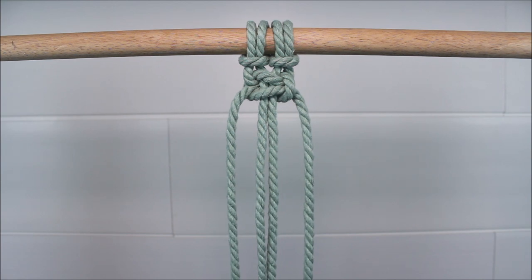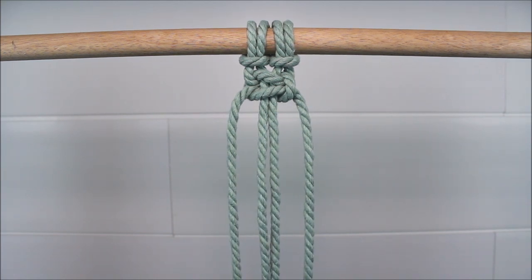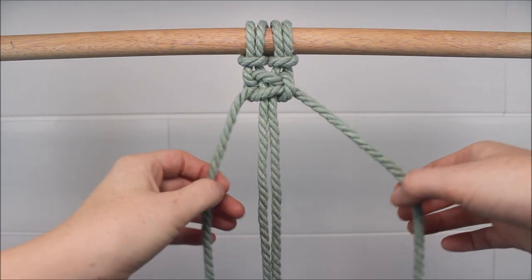Then pull on those two ends gently together to tighten up the knot. And that is how you tie a full right facing square knot. And then to just keep tying more of these knots, we repeat starting again on the right side.